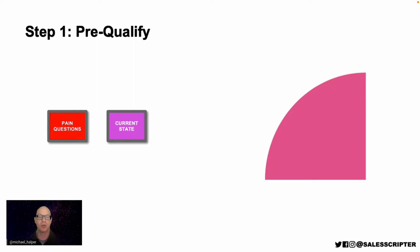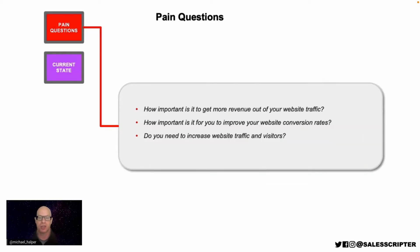These questions do a great job of figuring out what's going on and whether the prospect is in the area of 'there may be a fit' or they don't need what you sell at all. For example, pain questions can help you identify whether the prospect is having challenges in the area where you have something to offer, or if everything is great. If everything is great, they might be in the area where they do not fit and do not need what you sell.